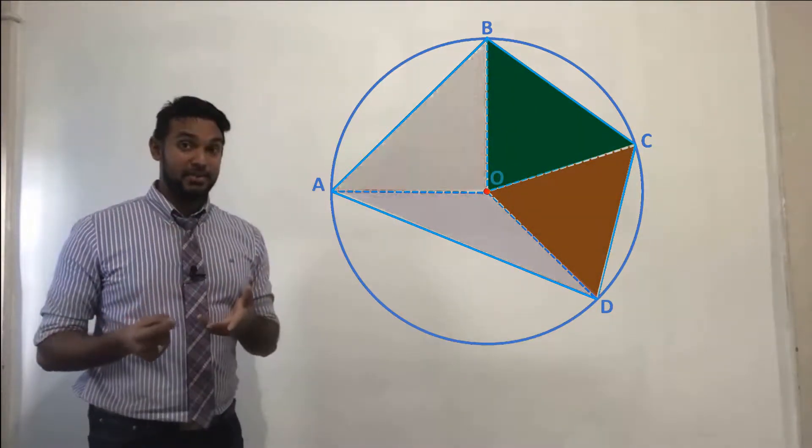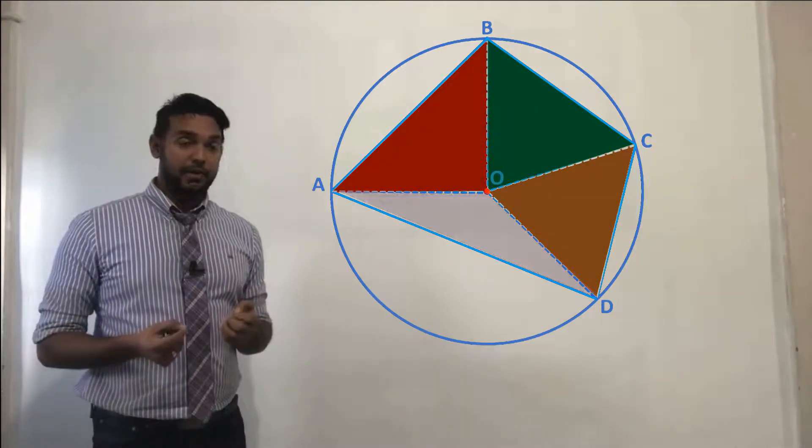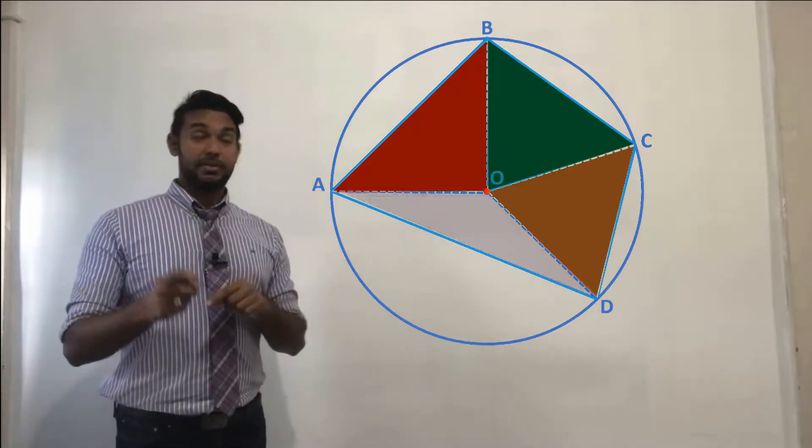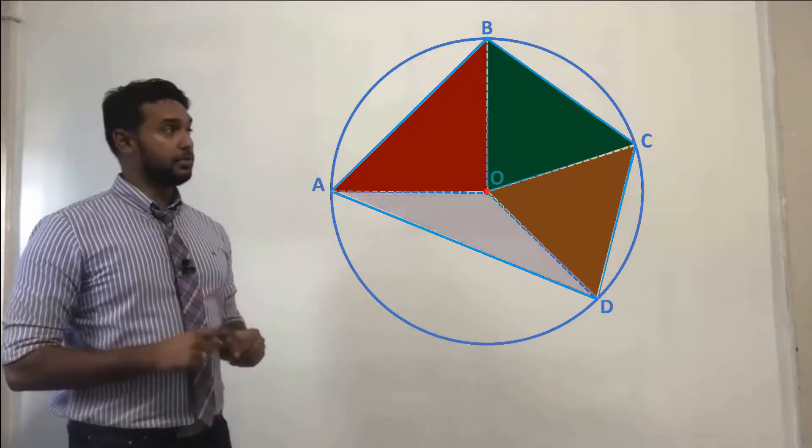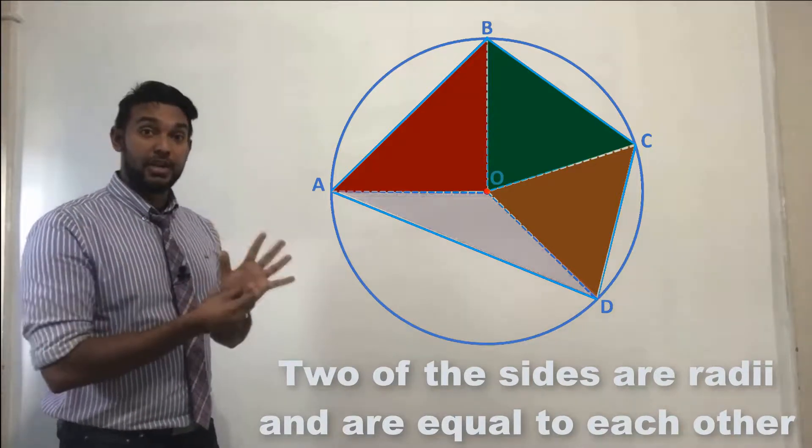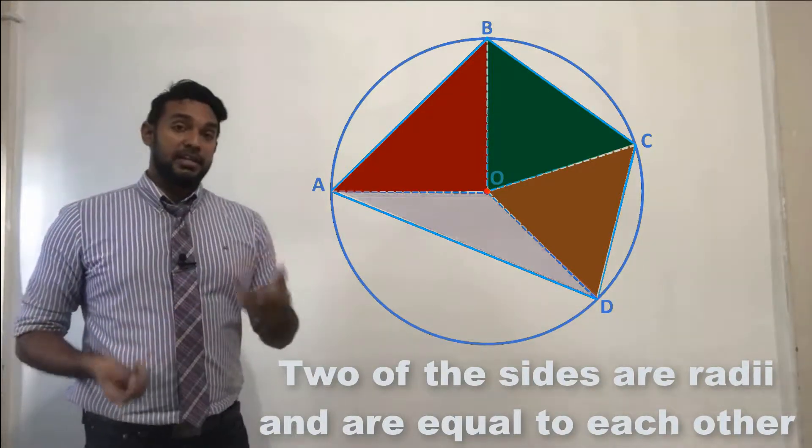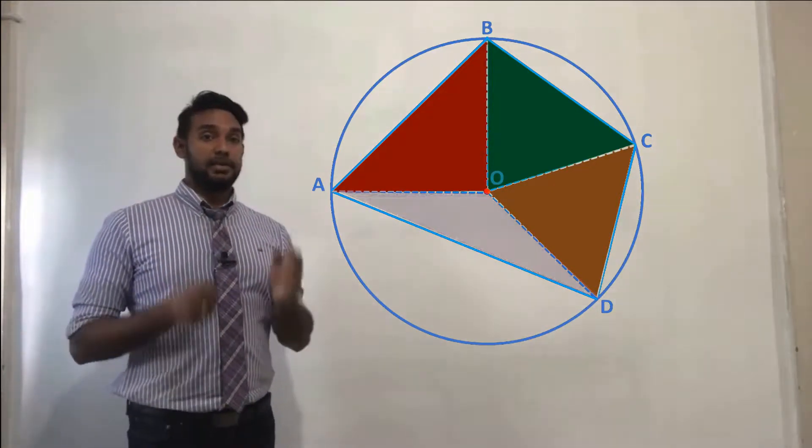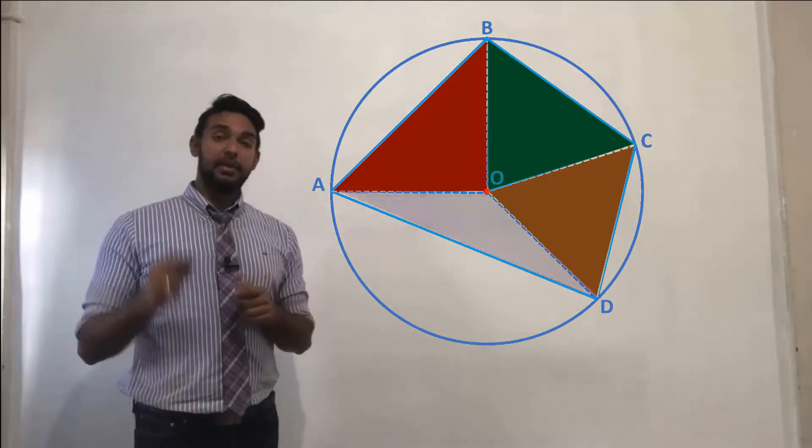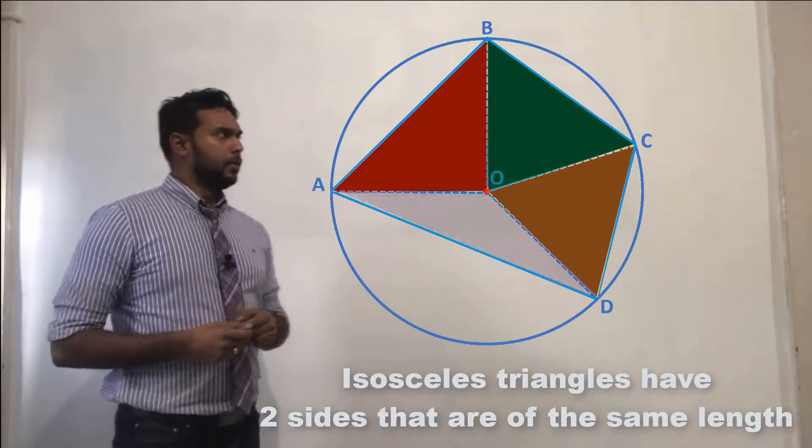And not just any type of triangle, an isosceles triangle. Why isosceles? Because in each and every one of these triangles, two of the sides are radii. And all radii are equal in length. And any triangle that has two sides equal to each other in length is an isosceles triangle.